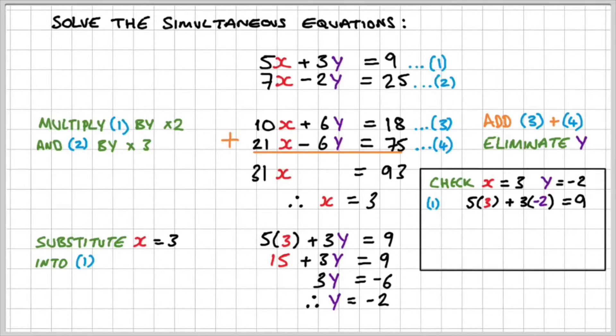So for equation 1, 5 times 3 plus 3 times negative 2 is equal to 9. Since 15 minus 6 is equal to 9, I know that both sides are balanced. So that checks out fine.